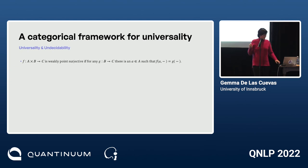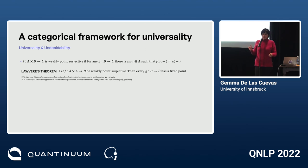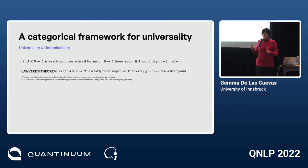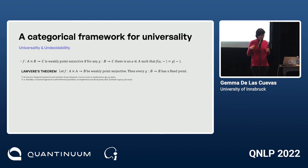Lawvere's theorem says that if F is weakly point surjective from A×A to B, then every G has a fixed point. In plain words: if the function is weakly point surjective, the G's cannot be too expressive — they cannot be too general, in order to avoid a contradiction. The contrapositive: if there is a G without a fixed point, like negation, then F cannot be weakly point surjective.